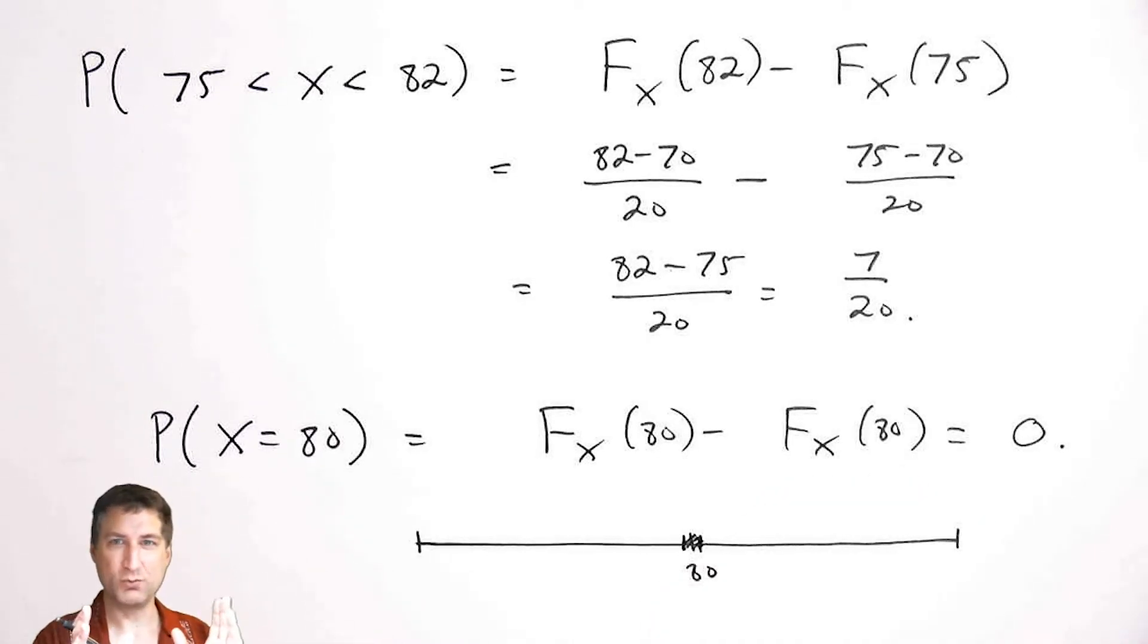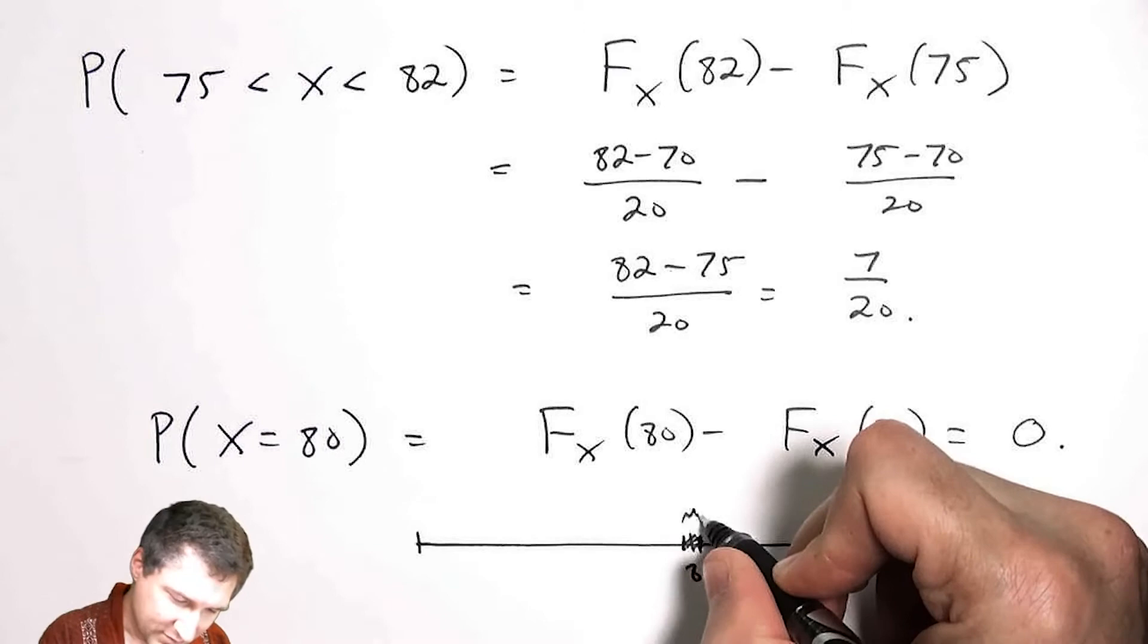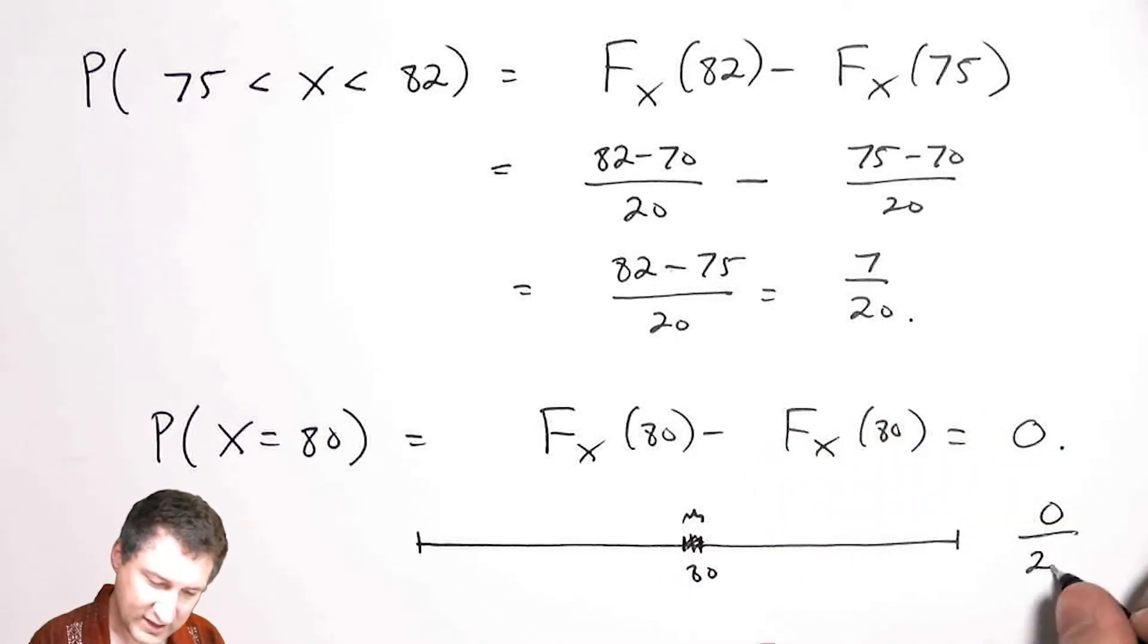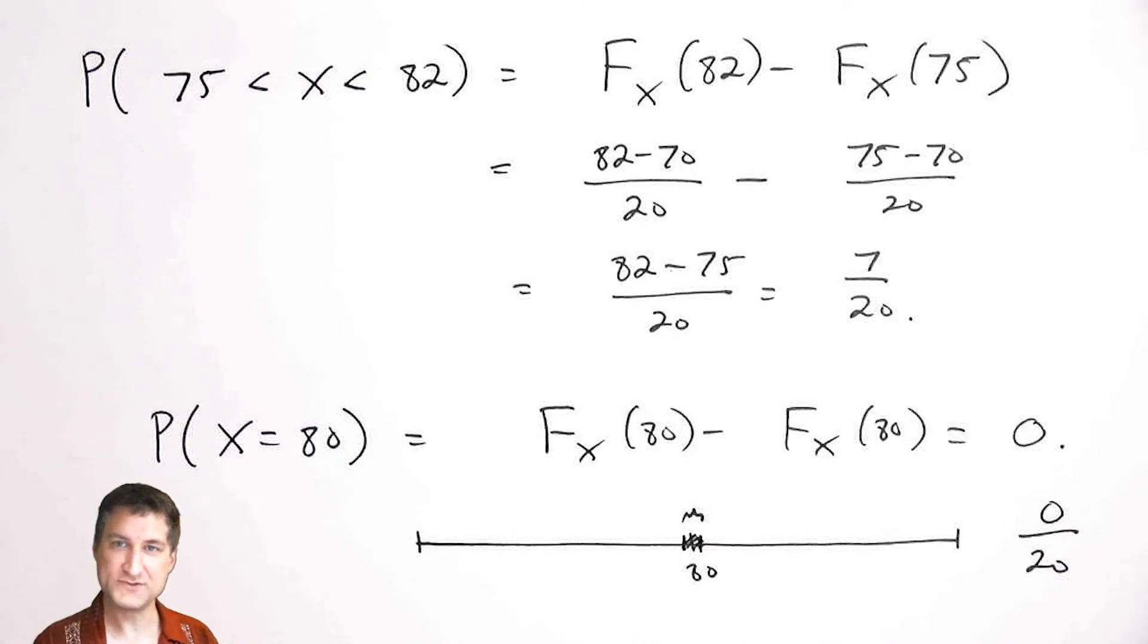A different way to think about this is, let's suppose that I consider some super teeny interval around 80, like 80 plus or minus one nanosecond. That number is going to get smaller and smaller in the limit. So the numerator is going to be zero, and the denominator is going to be the length of the interval. So this is generally the way it works for continuous random variables is that you never have any probability of getting exactly some particular thing. I will say that it is possible to have some sort of weird mixed random variable, but we're not going to really talk about that too much in this class.